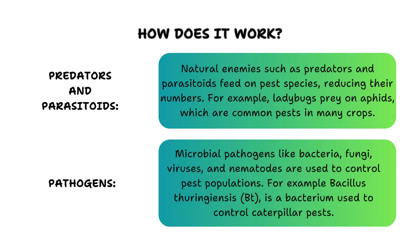We also have pathogens — such as bacteria, viruses, and fungi — that infect and kill pests. An example is Bacillus thuringiensis, commonly known as Bt, which is a bacterium used to control caterpillar pests.